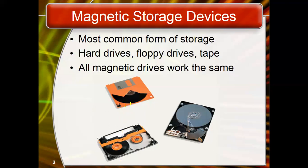When these discs were inserted into computers to store or open data, there were drawbacks — for example, if you scratched the disc it would not work properly. Just like a hard drive, the media used in removable magnetic storage devices is coated with iron oxide, a ferromagnetic material, meaning if you expose it to a magnetic field it is permanently magnetized.